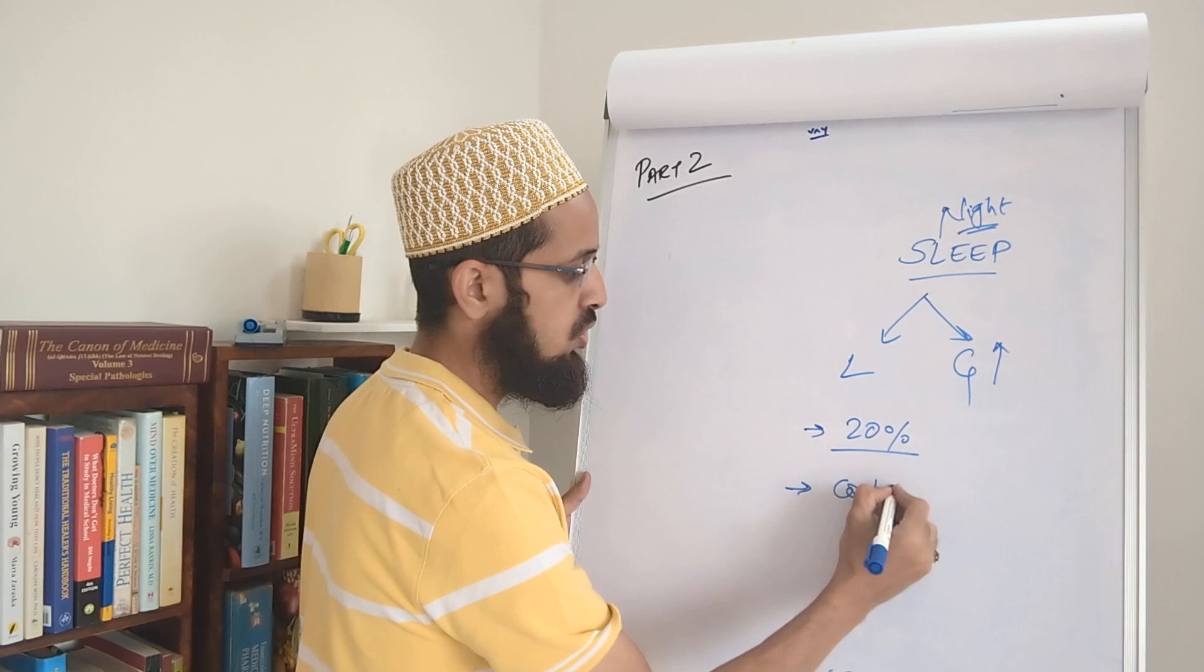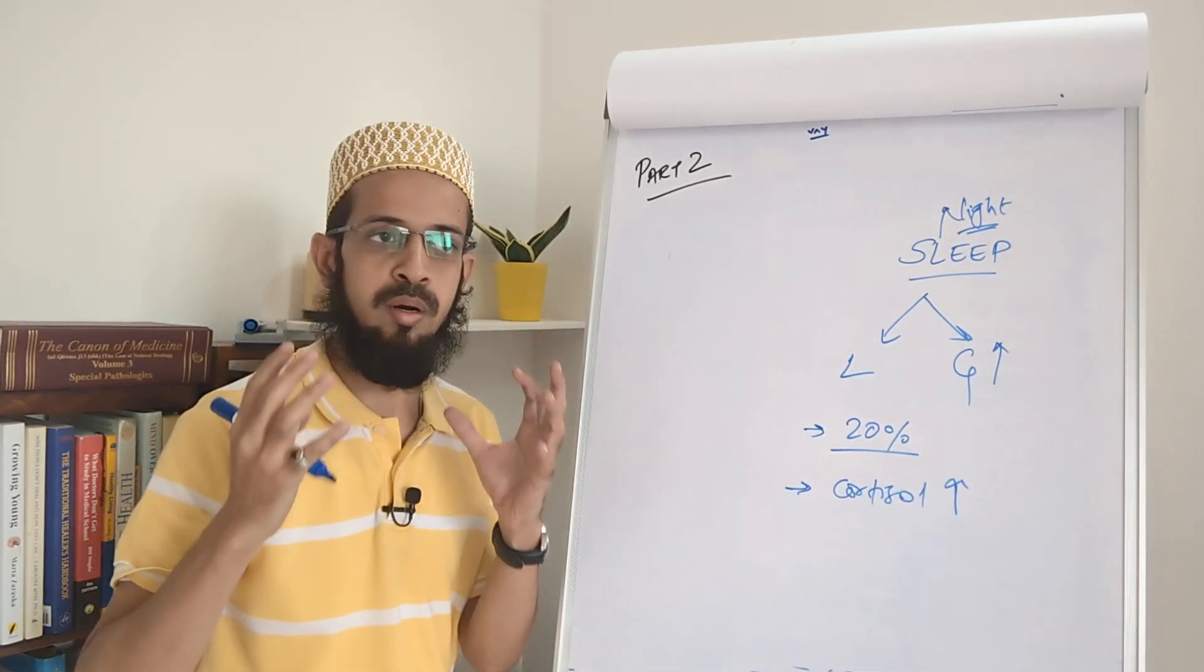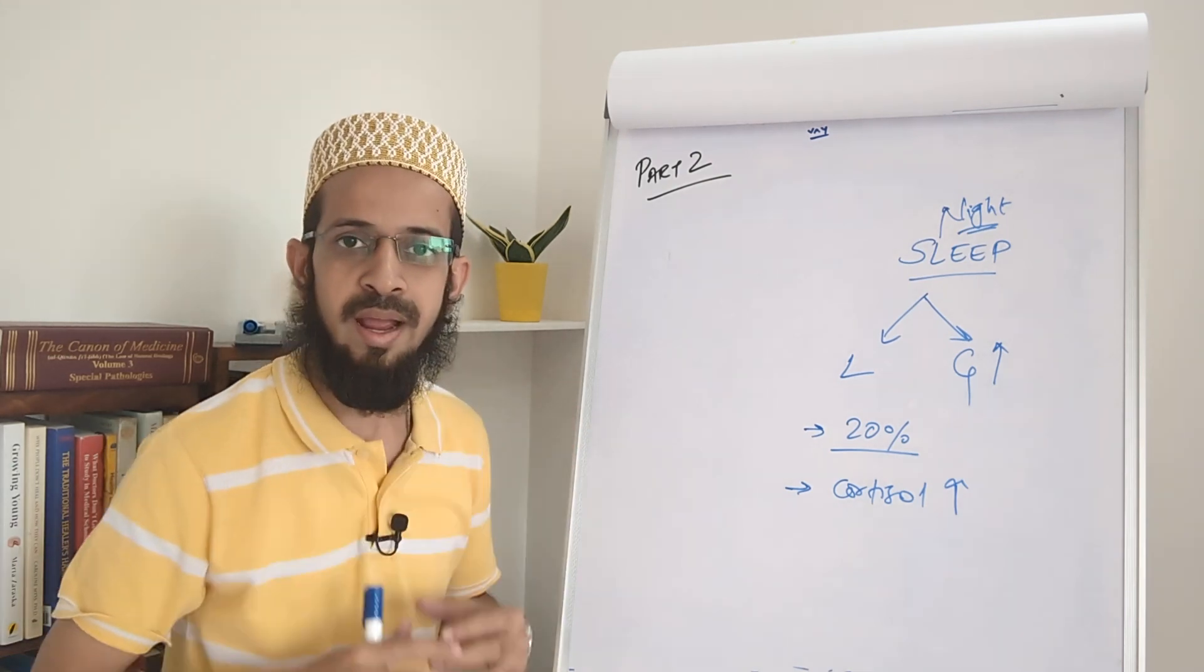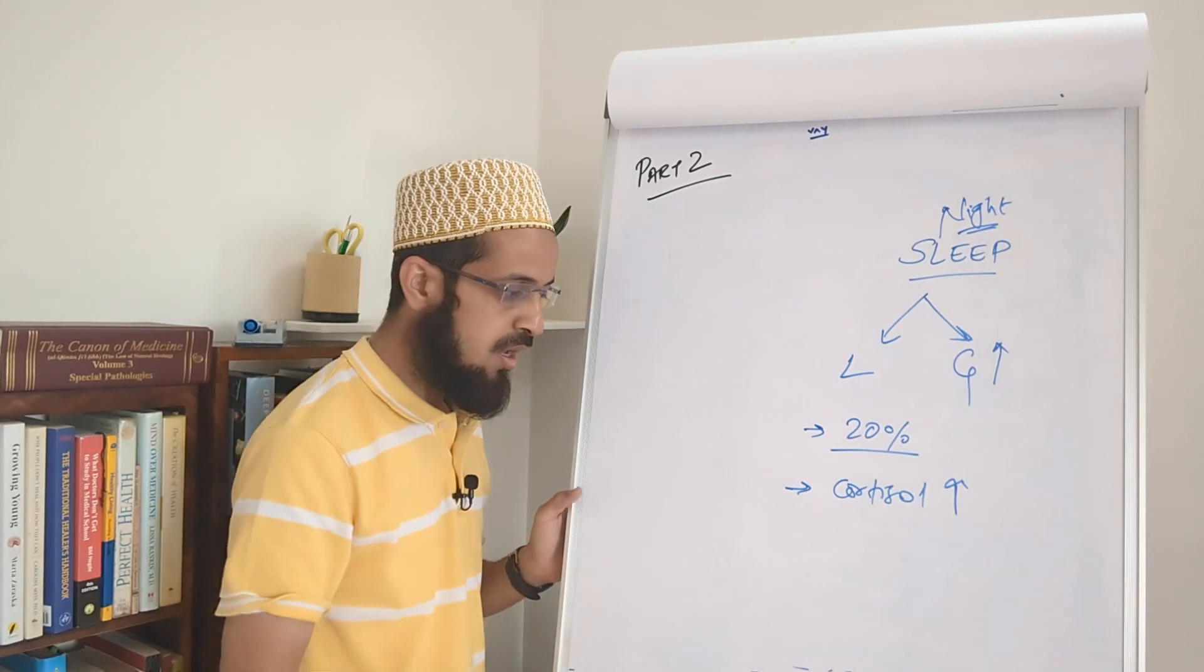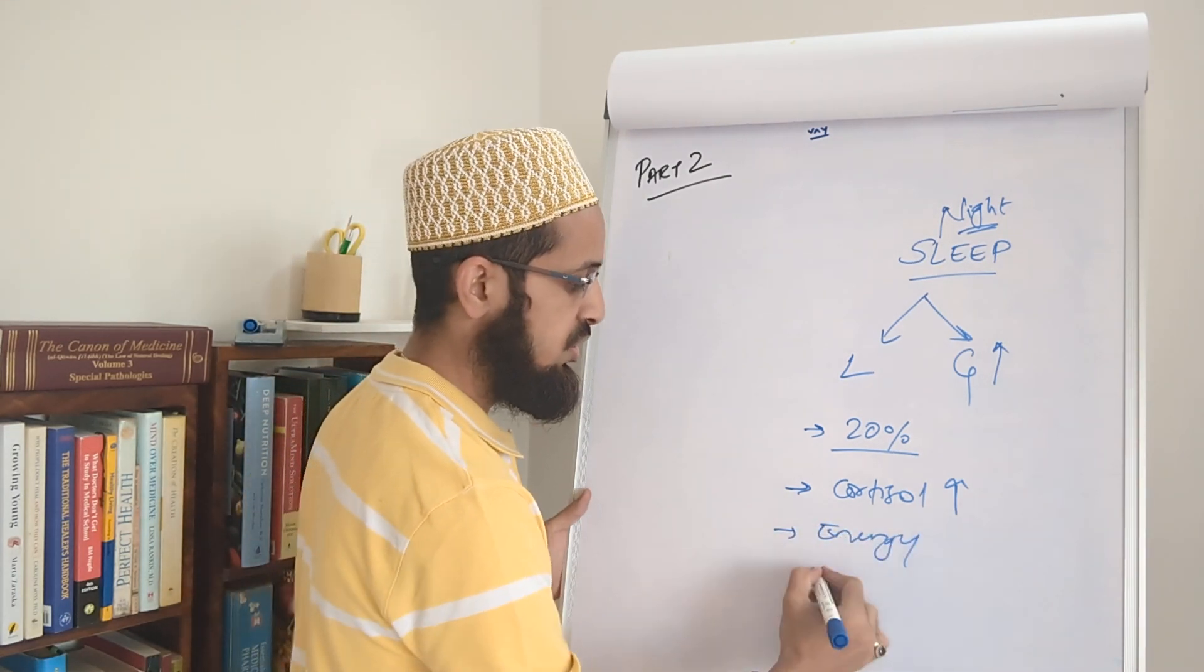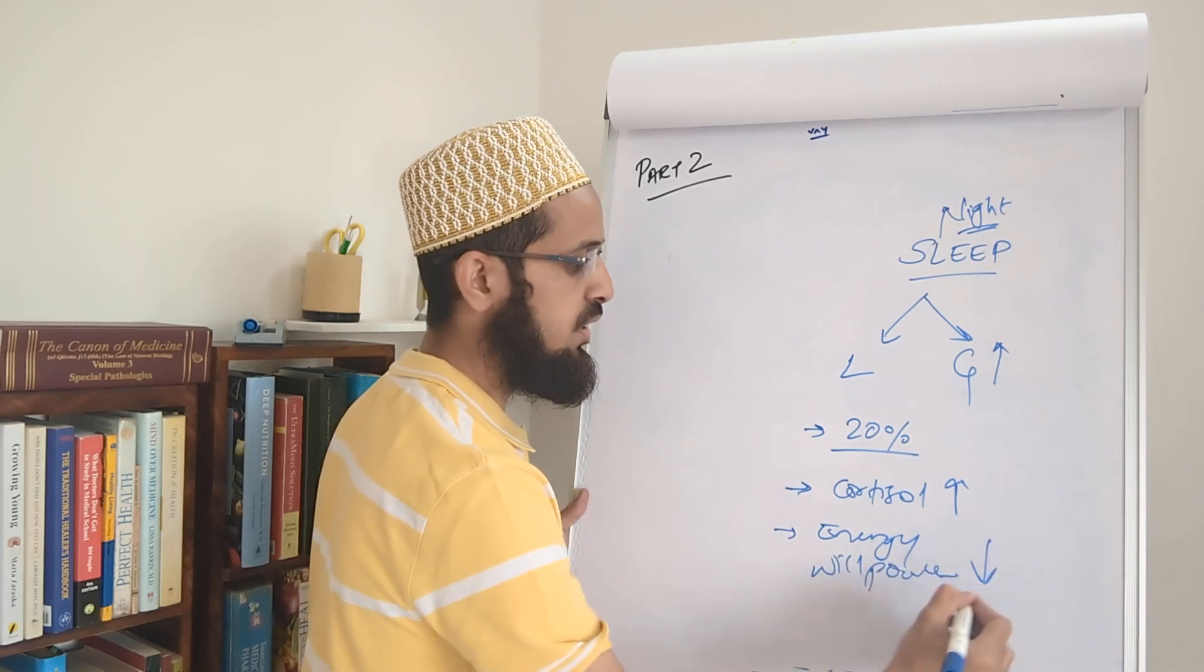Not just that, your cortisol level which is the stress hormone, it shoots up, and then when it shoots up you start craving all the unhealthy, processed and junk food. Along with that, your energy levels, your willpower and your self-control, it goes down.